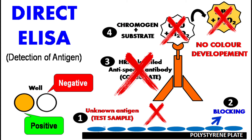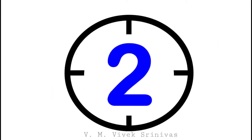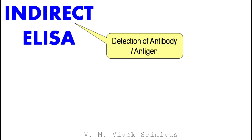So here, lack of color development indicates the test sample is negative, and color development indicates the test sample is positive. Next, Number 2: Indirect ELISA, used for the detection of antibody or antigen, but mostly used for the detection of antibody.